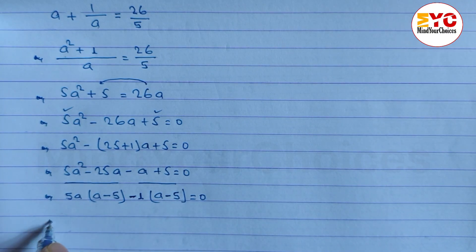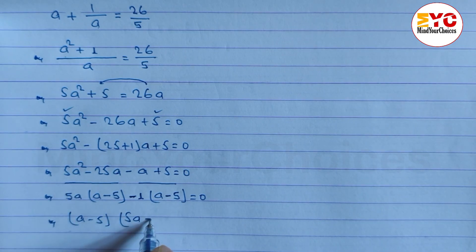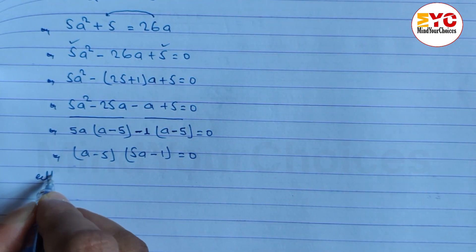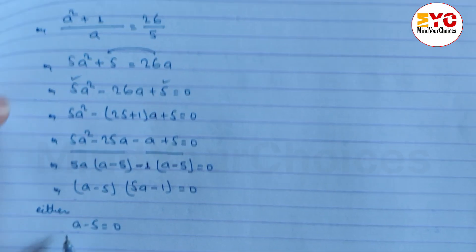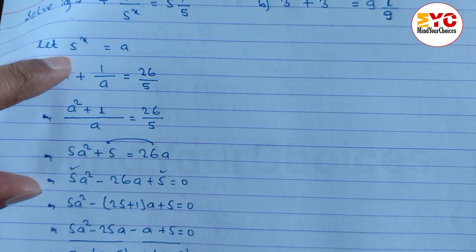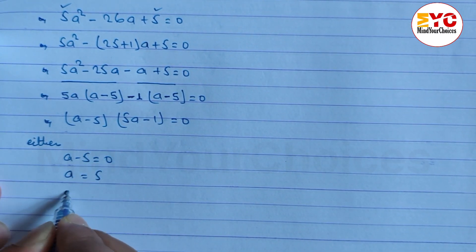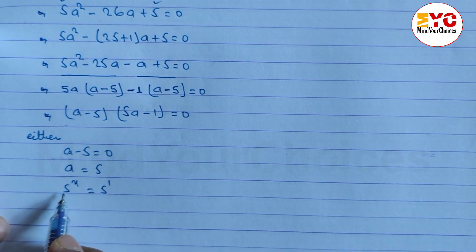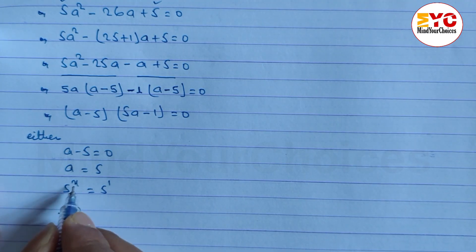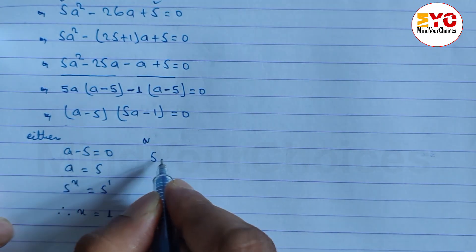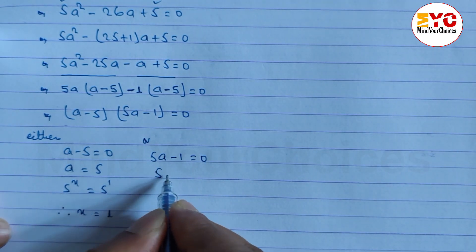So: 5a squared minus 25a minus a plus 5 equals 0. We take (a minus 5) common — remaining is (5a minus 1) equals 0. Now either a minus 5 equals 0, so a equals 5. Substituting back: 5 power x equals 5 power 1. Base is the same, so x equals 1.